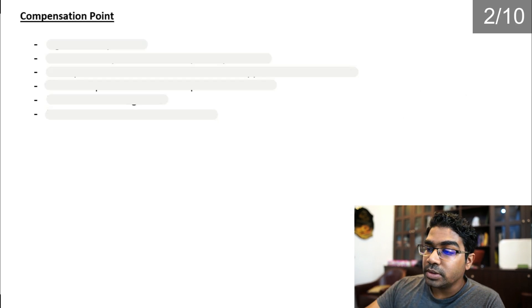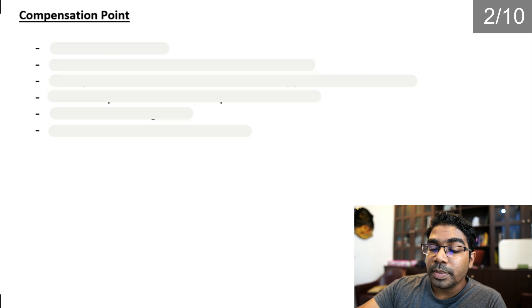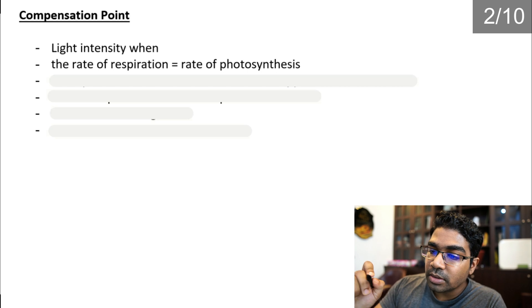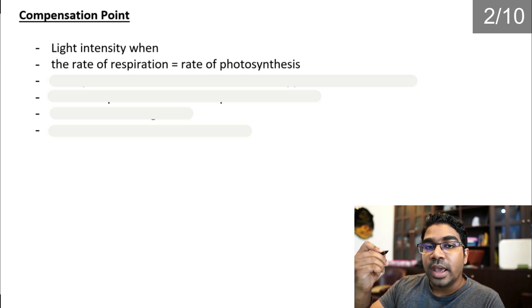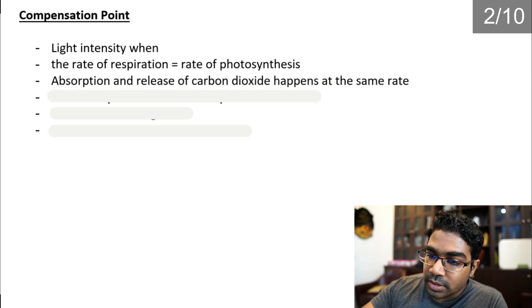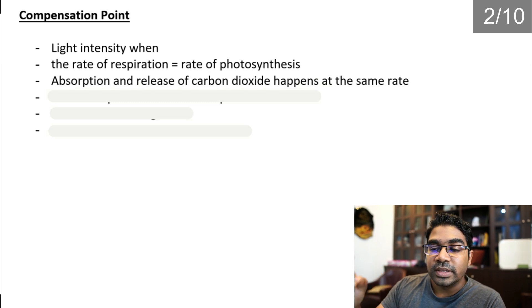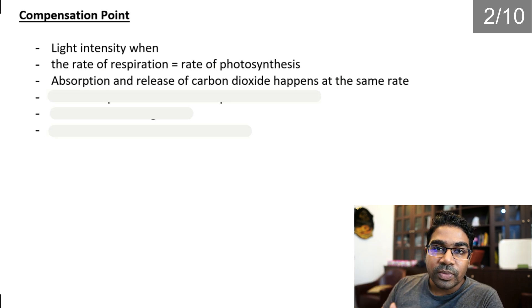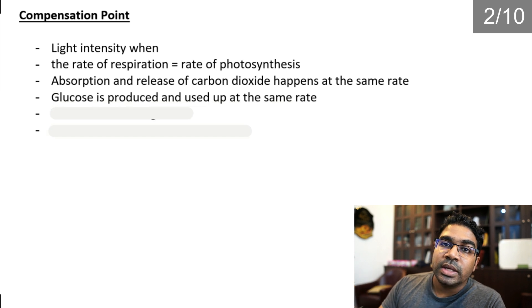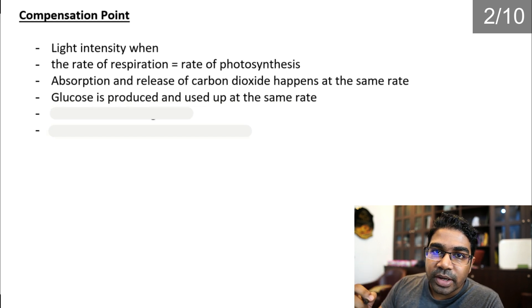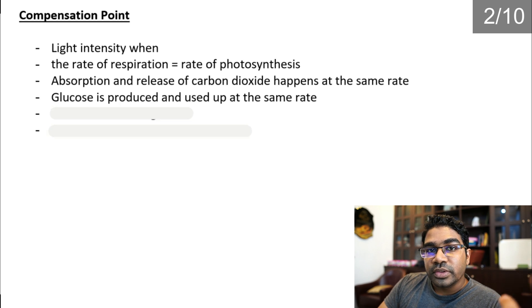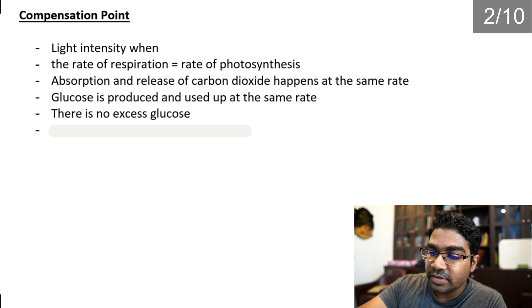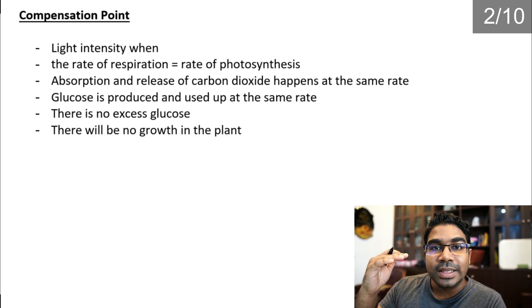Let's talk about compensation points. The compensation point is the light intensity at which the rate of respiration equals the rate of photosynthesis. As such, the absorption and release of carbon dioxide happen at the same rate, and the glucose produced is also used up at the same rate, because glucose is produced during photosynthesis and used up during respiration. Therefore there is no excess glucose and there will be no growth in the plant.